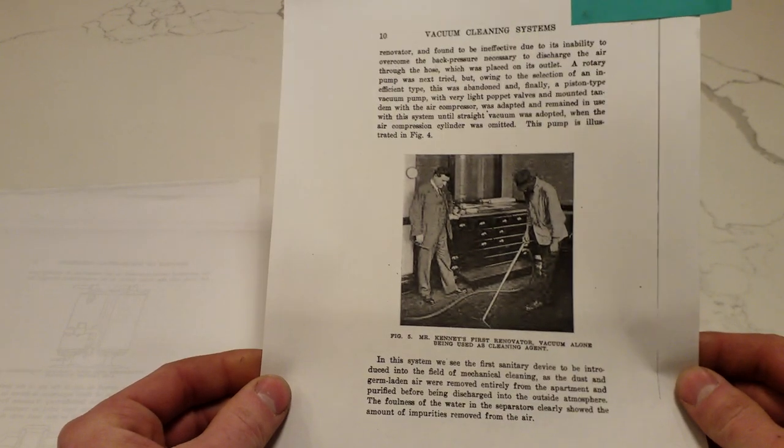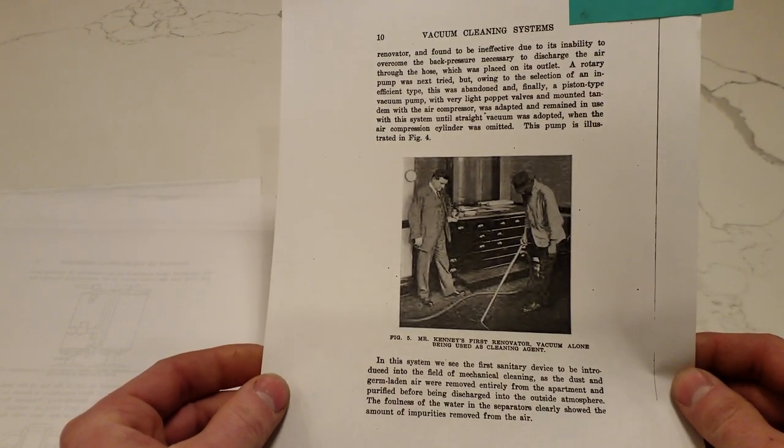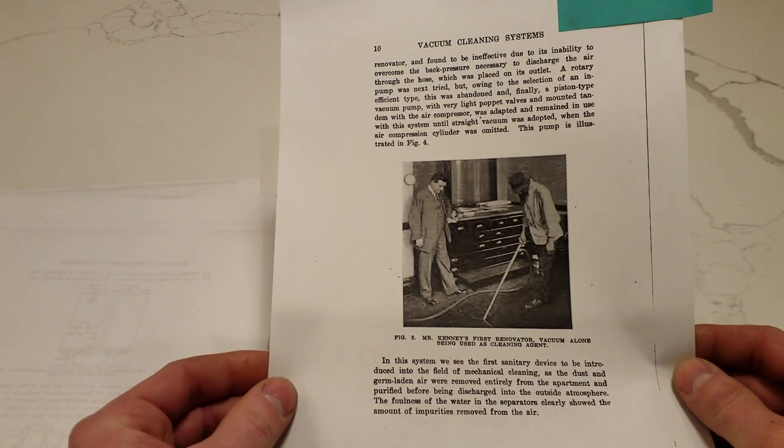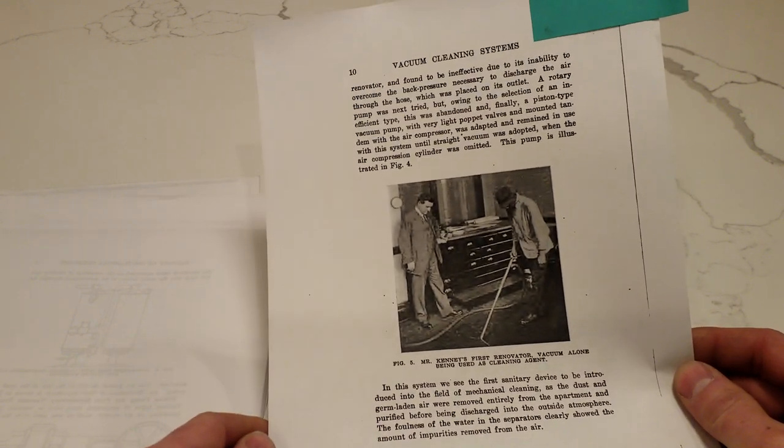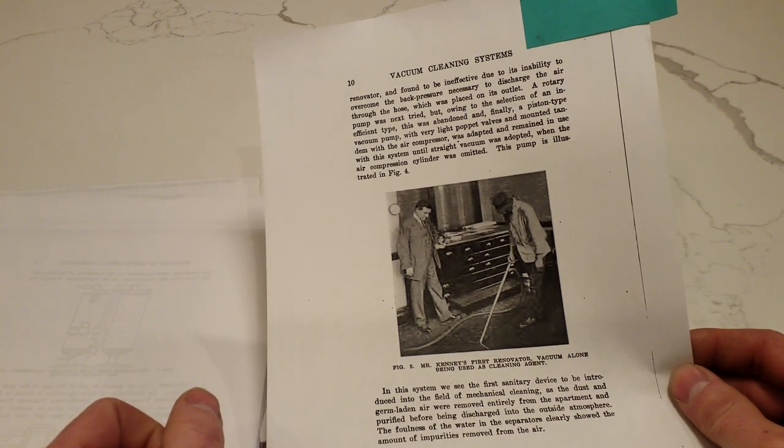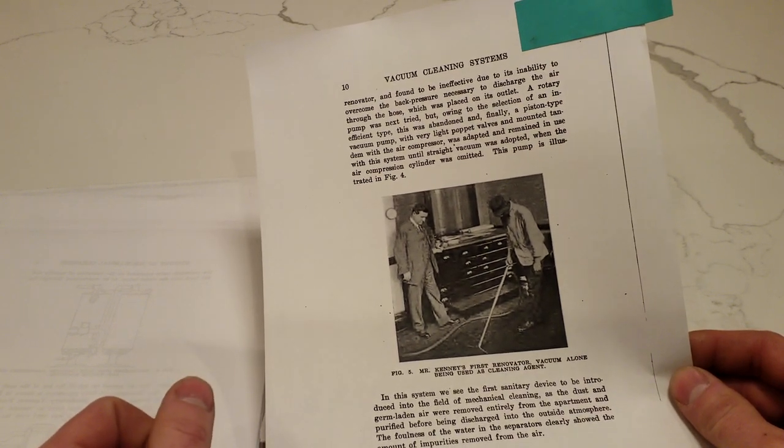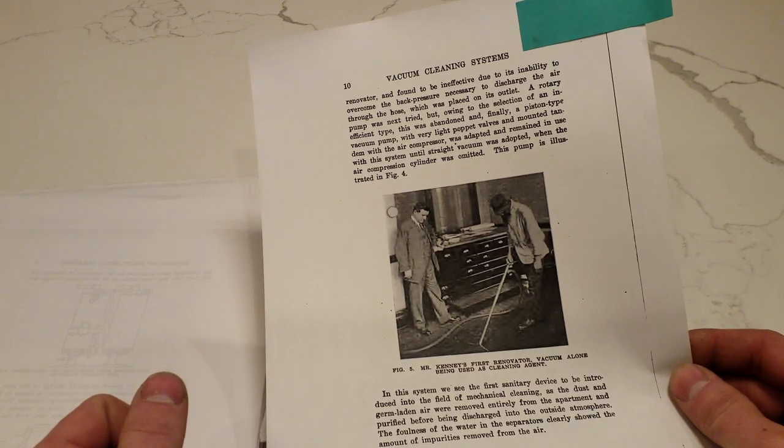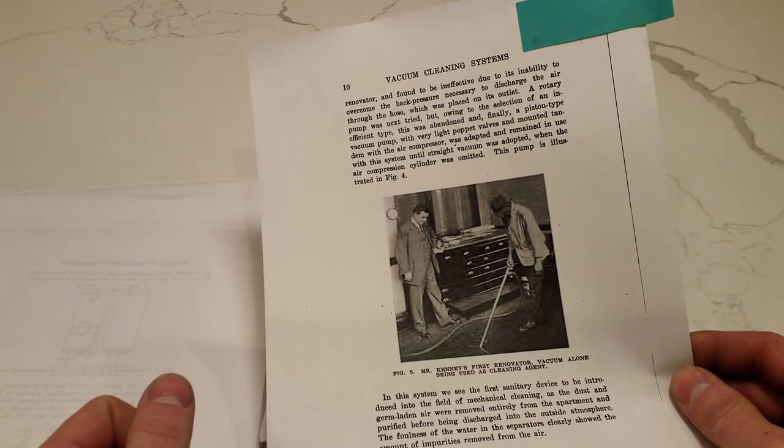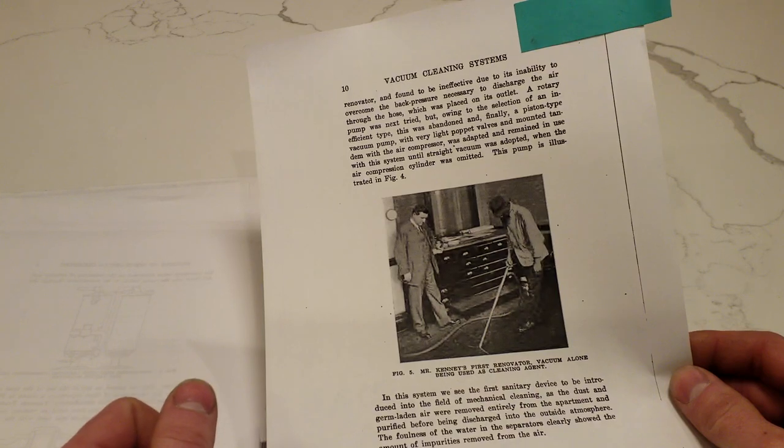Here's the earliest photo of a central vacuum in use. 1907, David Kenney there on the left. And David Kenney was the gentleman who received a patent on the basic idea of using air to produce suction through a nozzle and pick up dirt.